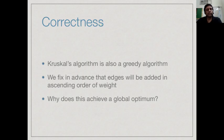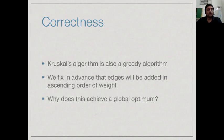Kruskal's algorithm is also a greedy algorithm. In Prim's or Dijkstra's algorithm we make incremental local choices at every point based on what we know now. Here we make a choice well in advance: we say right at the beginning, let us sort all the edges and process them in that order. It is not immediately clear why doing it in this particular order gives us an overall optimum solution.